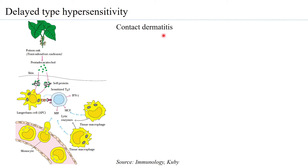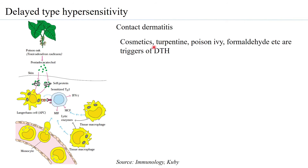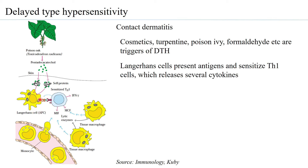One example of delayed type hypersensitivity is contact dermatitis, which can occur due to exposure of the skin to cosmetics, turpentine, poison ivy, formaldehyde, and others. For example, with poison oak, pentadecatechol enters the skin and is taken up by Langerhans cells. The Langerhans cells present it on the surface, which in turn binds to sensitized TH1 cells. Those sensitized TH1 cells then release several cytokines and chemokines.